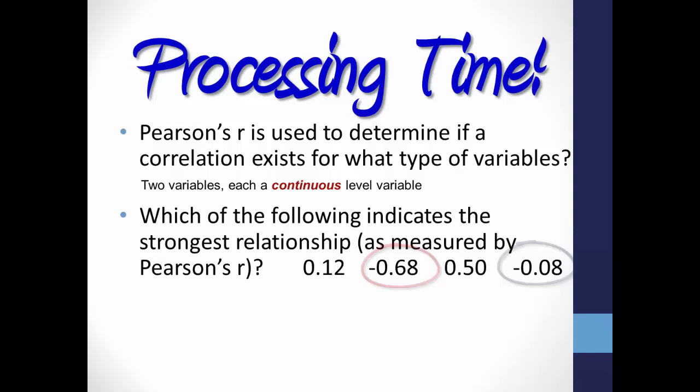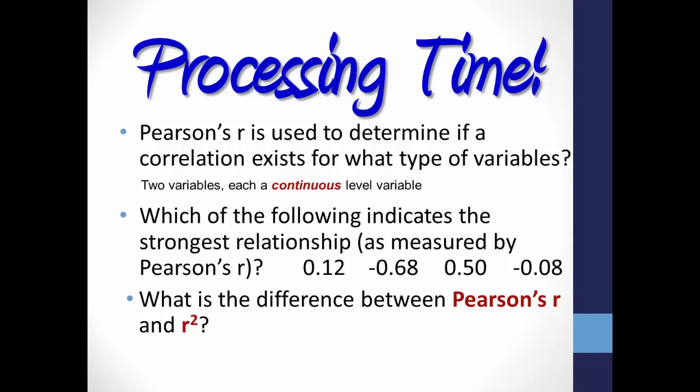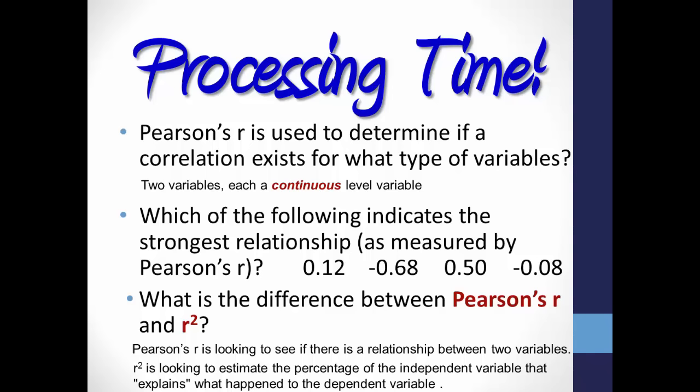What is the difference between Pearson's r and r-squared? Pearson's r is looking to determine if a relationship exists between two variables, and if so, what type of relationship. R-squared, used for regression analysis, is the Pearson's r statistic squared, used to estimate how much of the independent variable explains what happened to the dependent variable — or what percentage of the variation in the dependent variable can be explained by the independent variable.